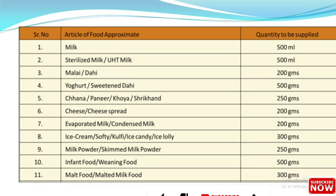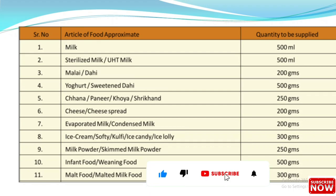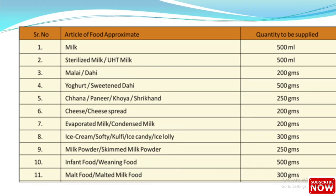The quantity of sample to be sent to the food analyst is given in a table. For milk and sterilized milk: 500 ml. Malai: 200 g. Yogurt, sweetened dahi: 500 g. Channa, paneer, khoya, shrikhand: 250 g. Cheese, cheese spread: 200 g. Evaporated milk, condensed milk: 200 g. Ice cream, softy, kulfi, ice candy, ice lolly: 300 g. Milk powder or skimmed milk powder: 250 g. Infant food or weaning food: 500 g. Malted milk food: 300 g.